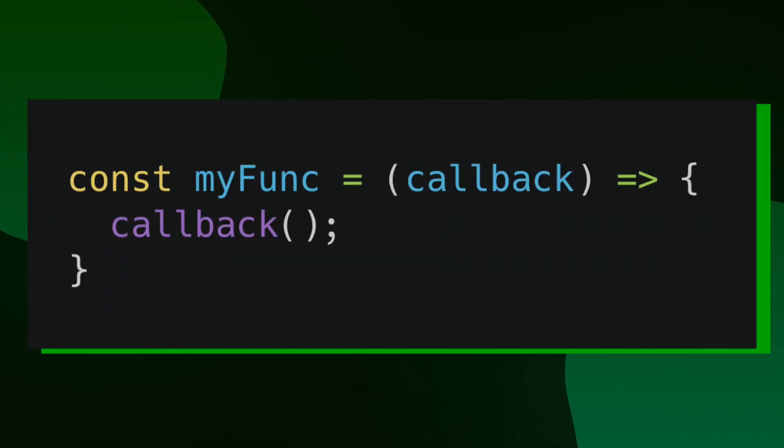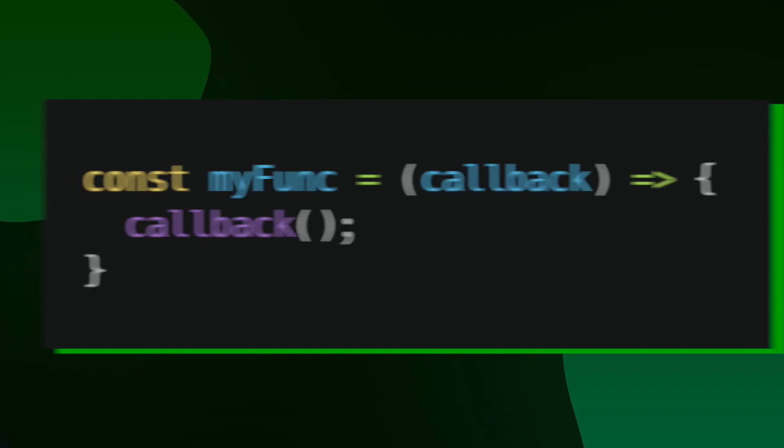But let's define what a callback function is. A callback function is a function that gets passed into another function as an argument, and then gets called within that function.